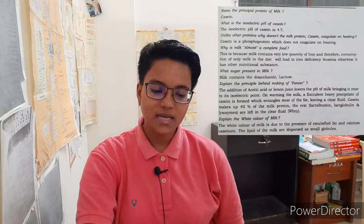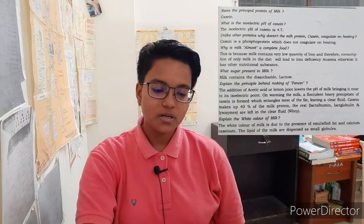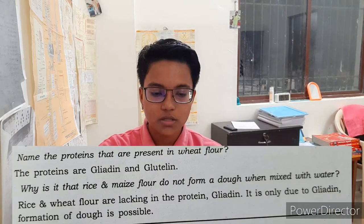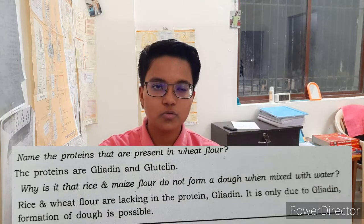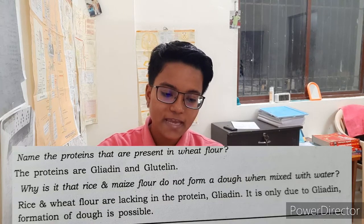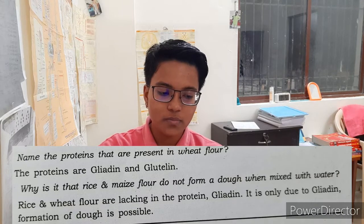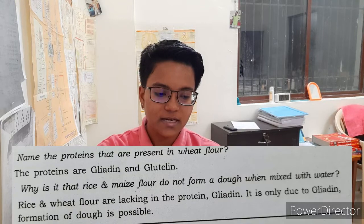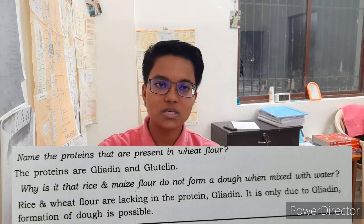Explain the white colour of milk. The white colour of milk is due to the presence of emulsified fat and calcium caseinate. The lipids of the milk are dispersed as small globules. Explain the proteins present in wheat flour. The proteins are gliadin and glutenin. Why do rice and maize flour not form a dough when mixed with water? Rice and maize flour lack the protein gliadin. It is only due to gliadin that formation of dough is possible.